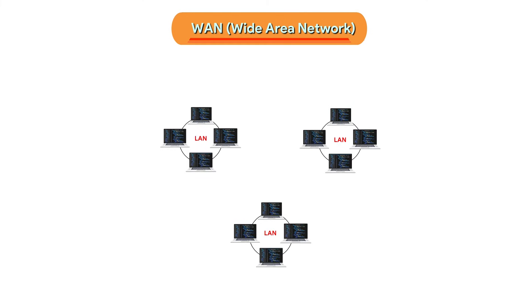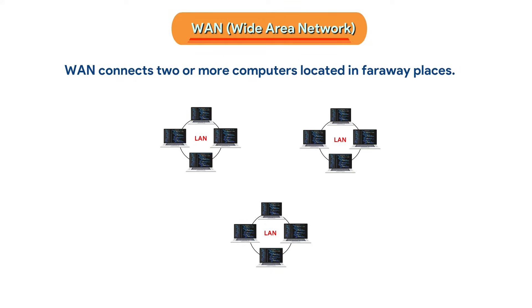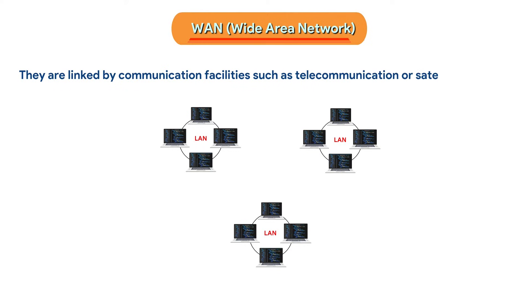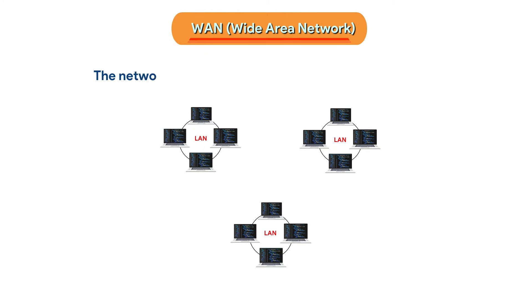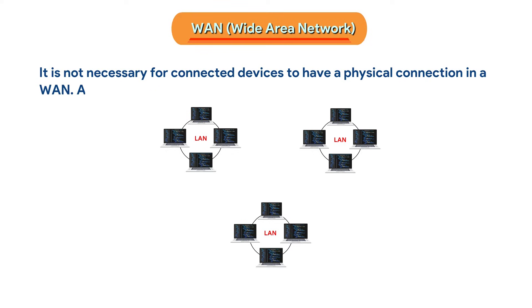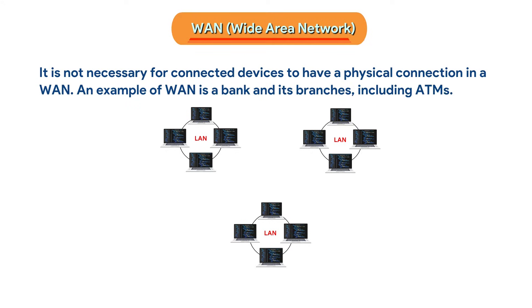WAN (Wide Area Network) connects two or more computers located in faraway places. They are linked by communication facilities such as telecommunication or satellite signals. The network operates on a worldwide or nationwide basis. It is not necessary for connected devices to have a physical connection in a WAN. An example of WAN is a bank and its branches, including ATMs.